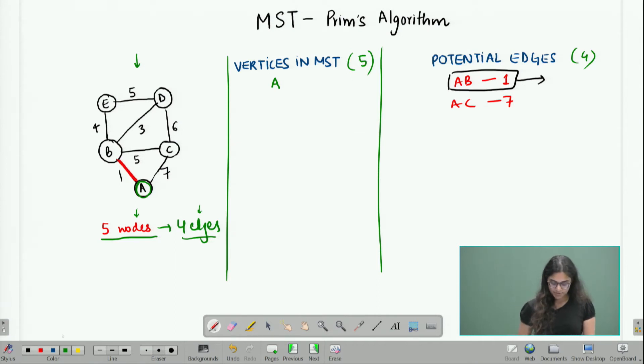Now, what happens as soon as I choose this edge is that vertex B becomes part of my MST. So, now I have chosen B to be part of my MST. Now, as soon as I choose B, I need to add all the edges which have B as one of its endpoints to my list of potential candidates. Hence, I add BE with weight 4, I add BD with weight 3 and I add BC with weight 5.